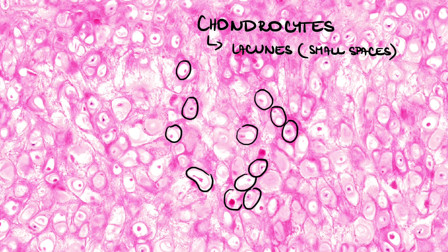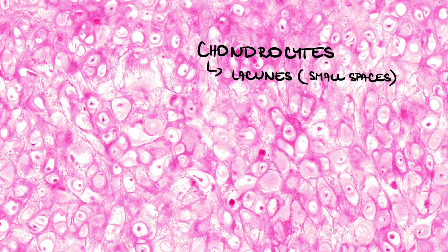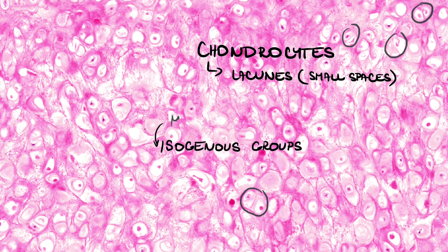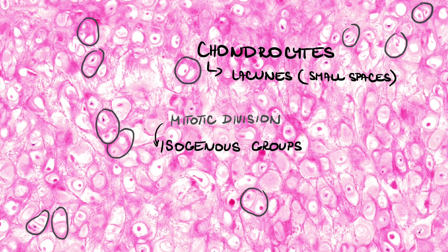Chondrocytes in cartilage are grouped together in so-called isogenous groups. These groups were created by mitotic division of cells. You can imagine an isogenous group like a house with rooms — lacunae. Sometimes there are more chondrocytes in one room, like siblings sharing one room.